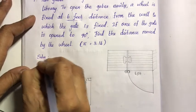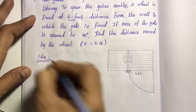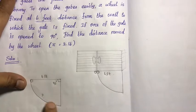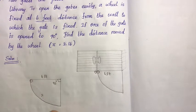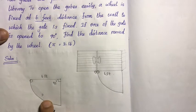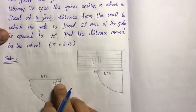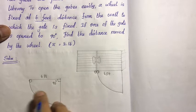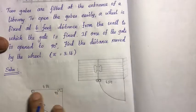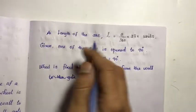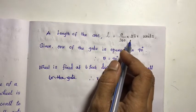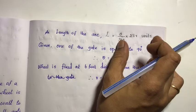Solution. The distance moved by the wheel is the length of the arc. Length of the arc formula: theta divided by 360, into 2 pi r units. Here, theta is the angle and r is the radius.